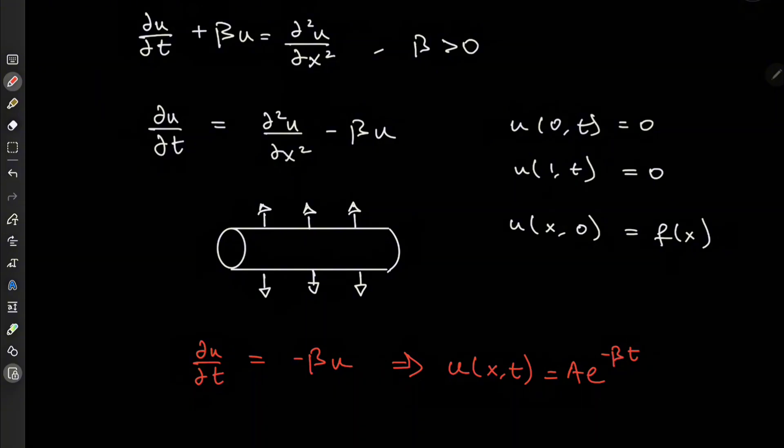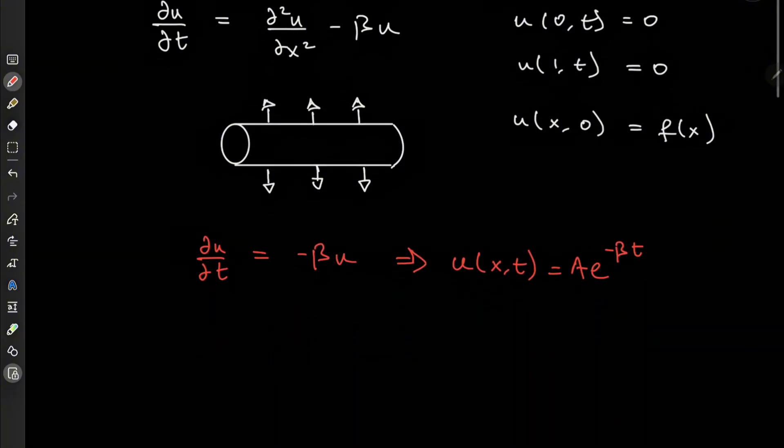So it may be reasonable to build on this by saying that our actual solution u of x,t could be this damping factor times another function w of x and t that is sort of separated from this lateral heat loss.